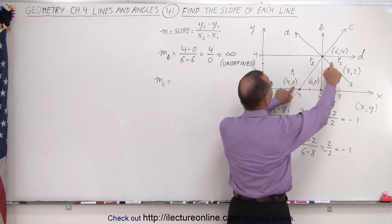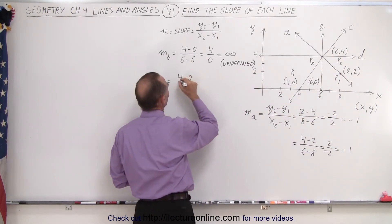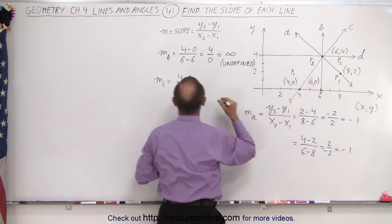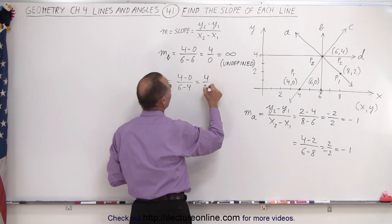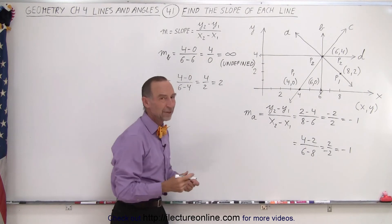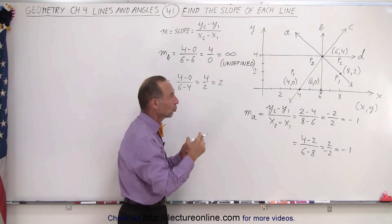And so we first find the difference of the y values, 4 and 0. So it would be 4 minus 0 divided by the difference of the x values, 6 minus 4. So this gives me 4 divided by 2, or 2. So the slope of line c is equal to 2. That means the rise over the run, the change in y to the change in x, is 2 to 1.